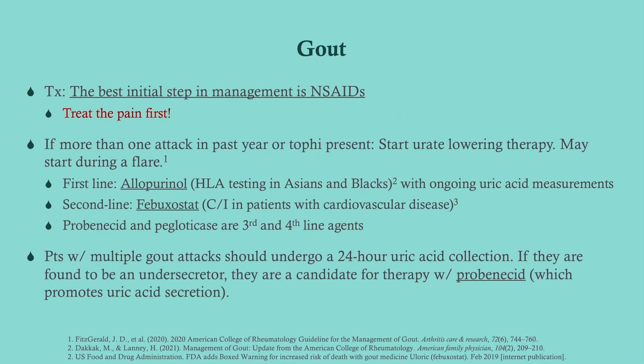Remember to treat the pain first. If there has been more than one attack in the last year, or if tophi are present, start urate-lowering therapy. Per the American College of Rheumatology as of 2020, you can start it during a flare. The first-line for urate-lowering therapy is allopurinol. However, some patients can develop an allergic reaction, so we do HLA testing in Asians and Blacks — though you don't expect to see that on your exam. Follow these patients monthly with uric acid measurements.